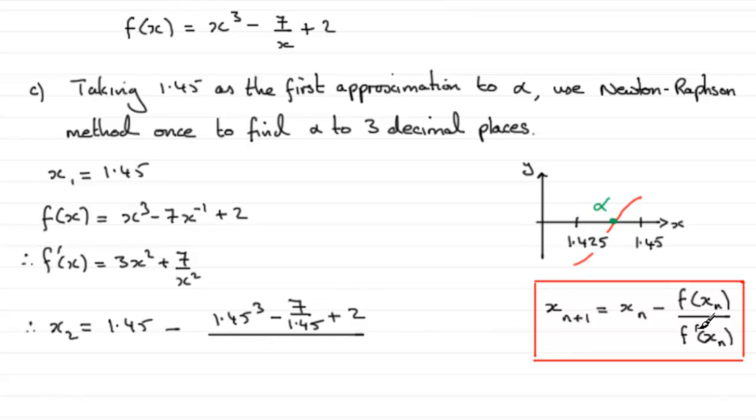f dash of 1.45, which is going to be 3 times 1.45 squared plus 7 over 1.45 squared. And if you work that out,